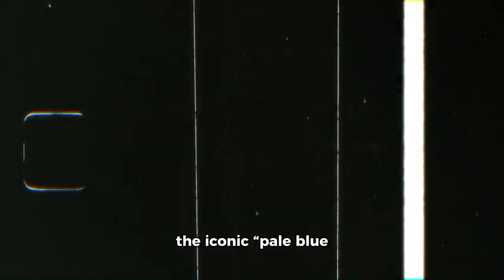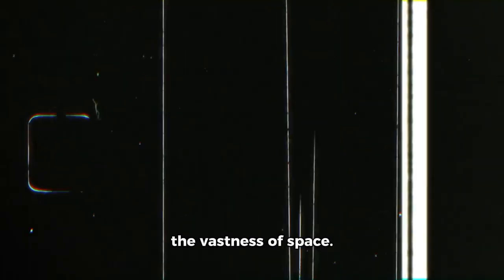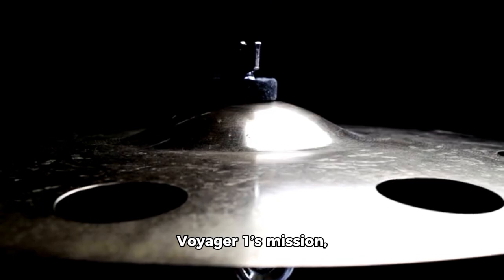During its travels, Voyager 1 sent back valuable data, including the iconic pale blue dot image, depicting Earth as a tiny speck in the vastness of space.